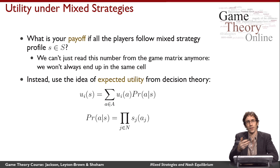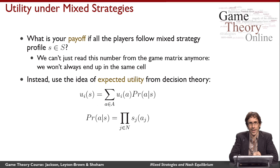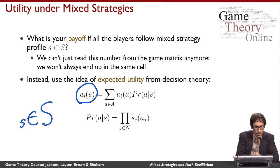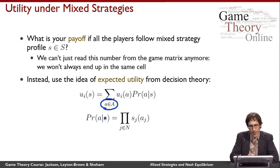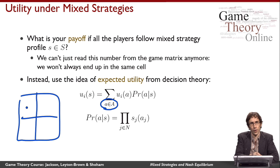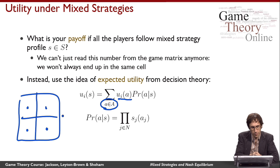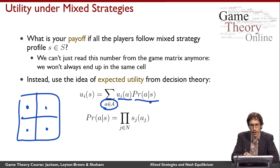I can extend my definition of utility by leveraging the idea of expected utility from decision theory. Player i's utility under mixed strategy profile s, where s is some element of the set of all possible mixed strategy profiles S, is equal to the sum over all action profiles in the game — intuitively, the sum over all cells in the normal form. I take the utility of each cell and multiply it by the probability that cell will be reached given the mixed strategy profile S.